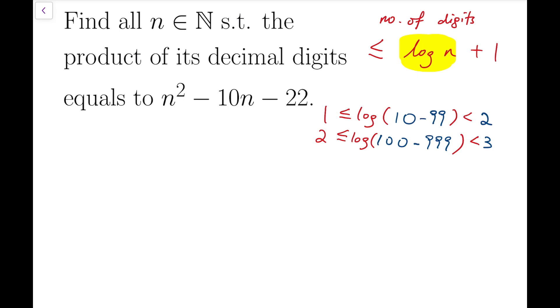Now having a bound on the number of digits in terms of n, I can now say that the product of these decimal digits, n squared minus 10n minus 22, is less than or equal to 9 to the power of the number of digits. The reason is that if all digits are 9, then the product of the digits will be 9 to the power of the number of digits, and it is surely less than or equal to that.